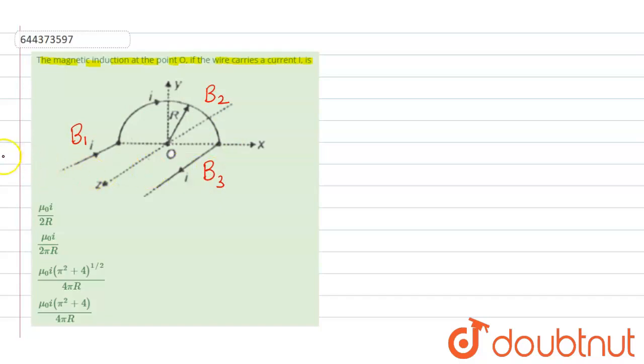Now first of all calculate B1. B1 will be mu naught upon 4 pi, it will be i upon r that is due to semi-infinite wire and its direction is according to right hand thumb rule, will be minus j cap that is negative y direction.